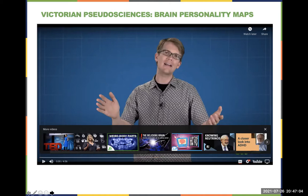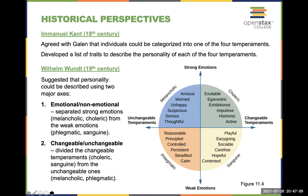Touching back on phrenology — measuring people's heads was still being done in Nazi Germany to justify the treatment of Jews, Romani people, and non-Aryan individuals. The mid-1800s may seem like ancient history, but this was still happening in the mid-1900s. And as mentioned, we still have linguistic echoes: 'lowbrow,' 'highbrow,' and 'well-rounded.'